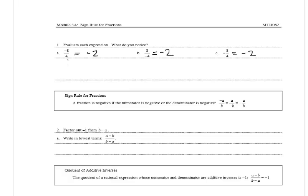We notice that in each expression, if the negative sign is in the numerator, the denominator, or out in front of the fraction, they all equal the same number. And that is our sign rule for fractions — whether the negative sign is in the numerator, the denominator, or out in front, they all equal the same value.